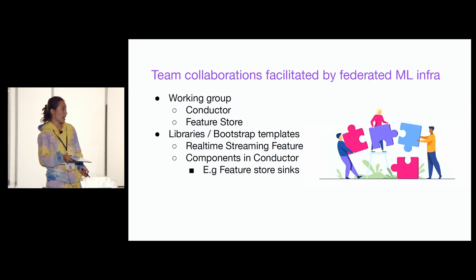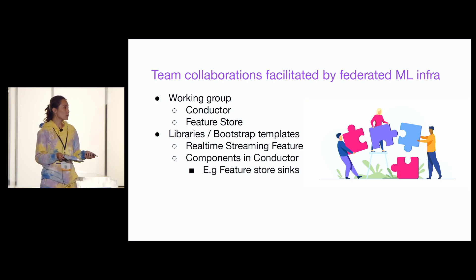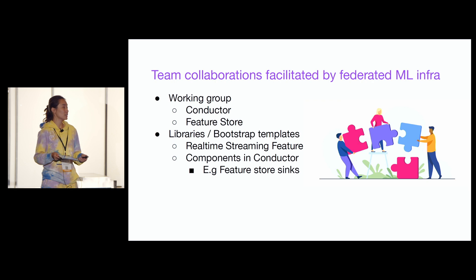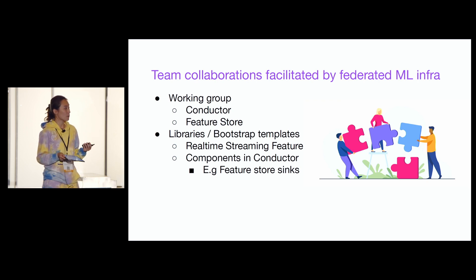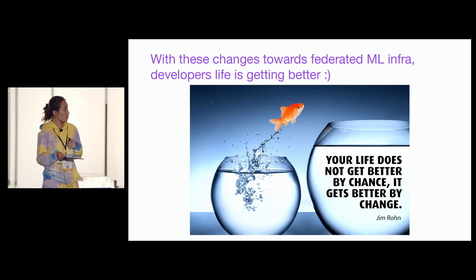Our collaboration patterns at Twitch ML teams come in two forms. The first is working groups — a set of scientists or engineers from different teams working toward the same goal, like building a feature store, sitting down together to create a joint plan with joint efforts toward an outcome. It's company-wide. The second is building libraries and bootstrapping templates. For example, Chen's team built a real-time streaming feature pipeline with Flink and a bootstrapping template, so my team can take it and spin up our own Flink instance immediately without a big learning curve. Encouraging collaboration through both working groups and libraries or bootstrapping templates will make everything better.